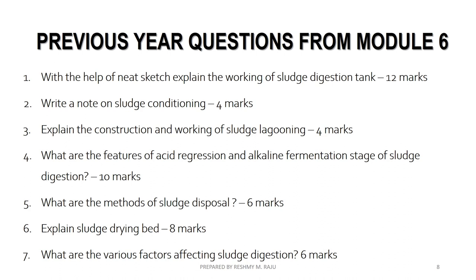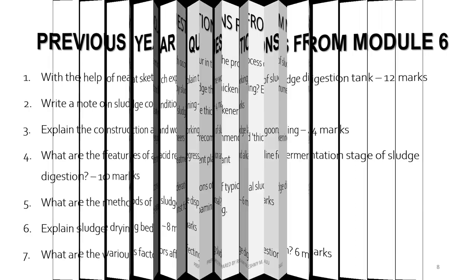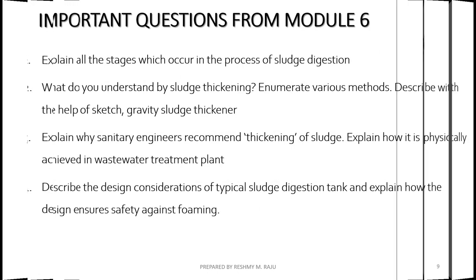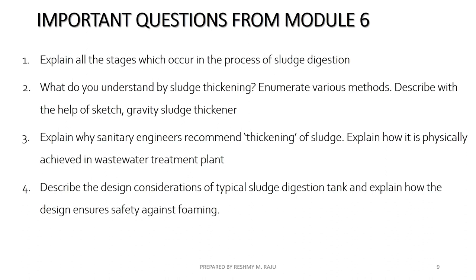There are a lot of factors affecting sludge digestion which we are going to study. Here are the important exam questions: Explain all the stages which occur in the process of sludge digestion. What do you understand by sludge thickening? Enumerate various methods. Describe with the help of a sketch, gravity sludge thickening. Explain why sanitary engineers recommend thickening of sludge and explain how it is physically achieved in a wastewater treatment plant. Describe the design considerations of a typical sludge digestion tank.